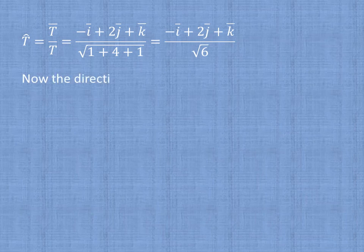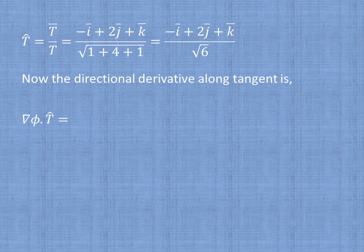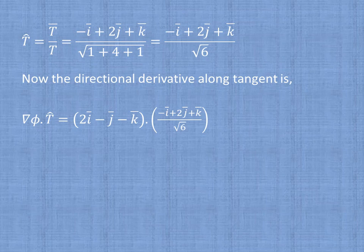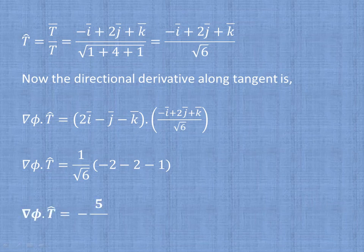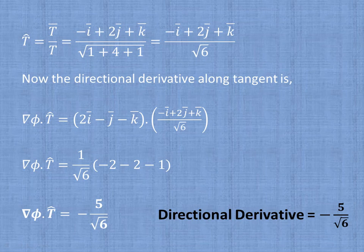The directional derivative along the tangent to the curve is del φ · T̂ = (2î - ĵ - k̂) · (-î + 2ĵ + k̂) / √6. Taking the dot product: (1/√6)[2·(-1) + (-1)·2 + (-1)·1] = (1/√6)[-2 - 2 - 1] = -5/√6. Therefore, the directional derivative equals -5/√6.